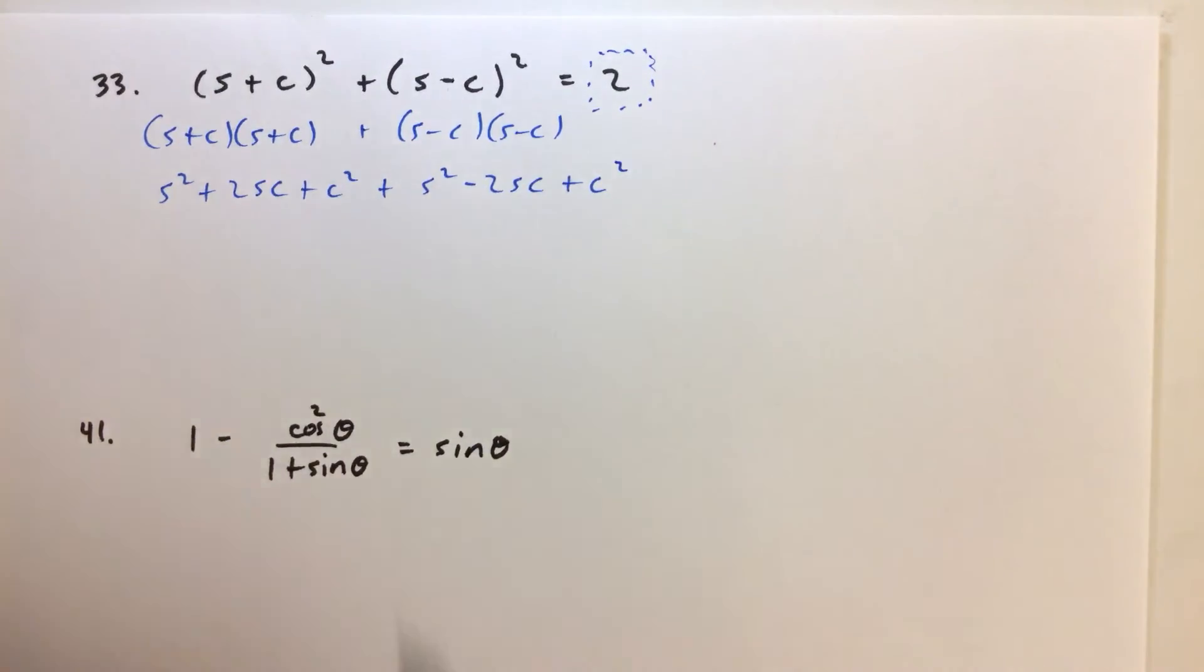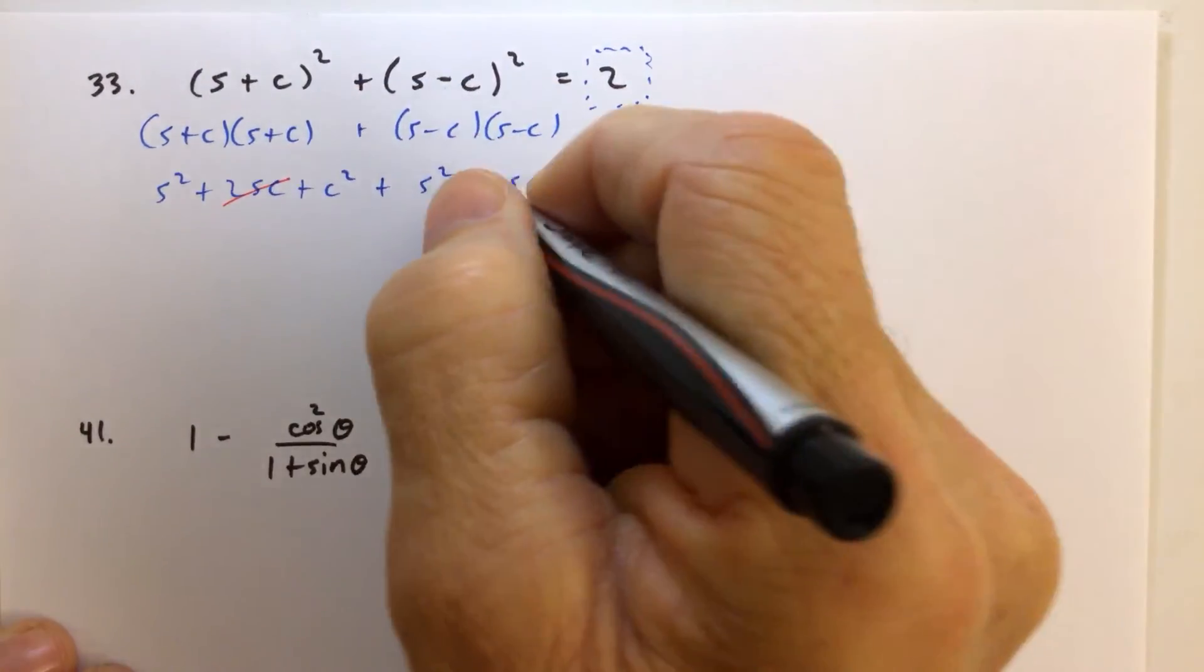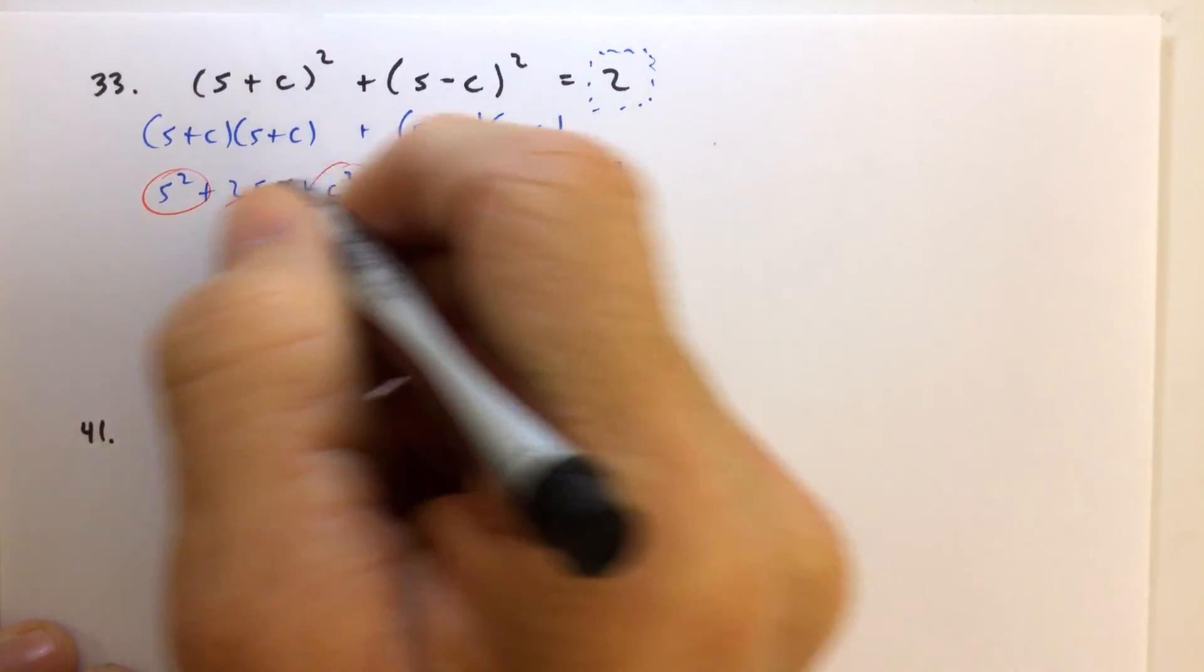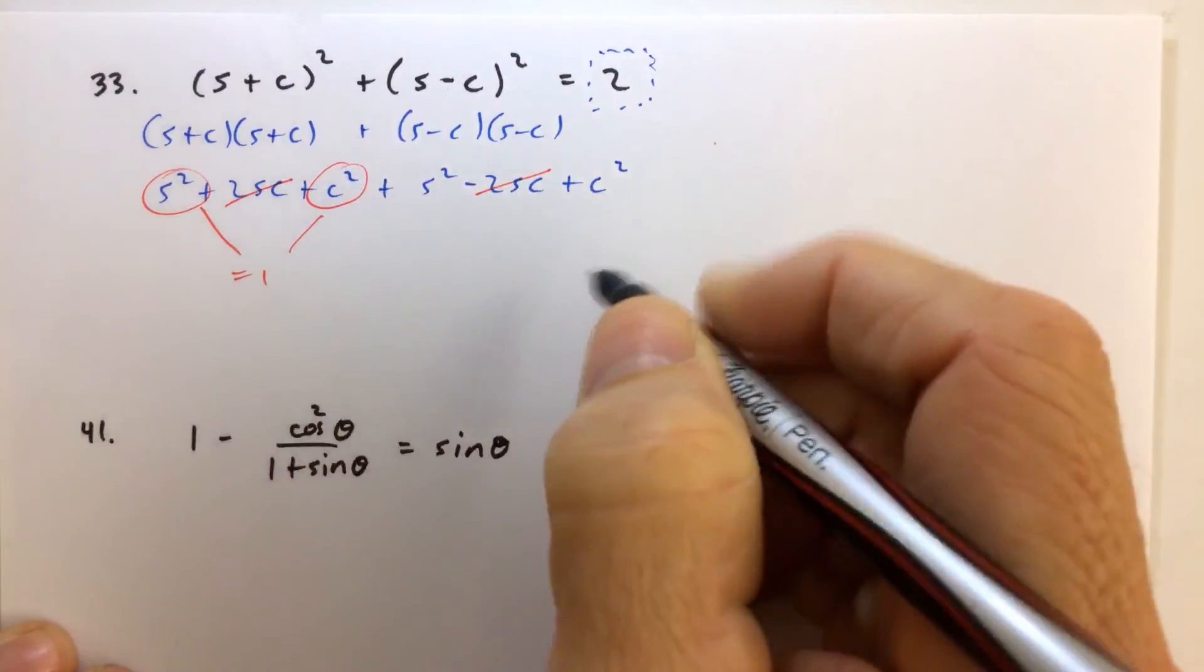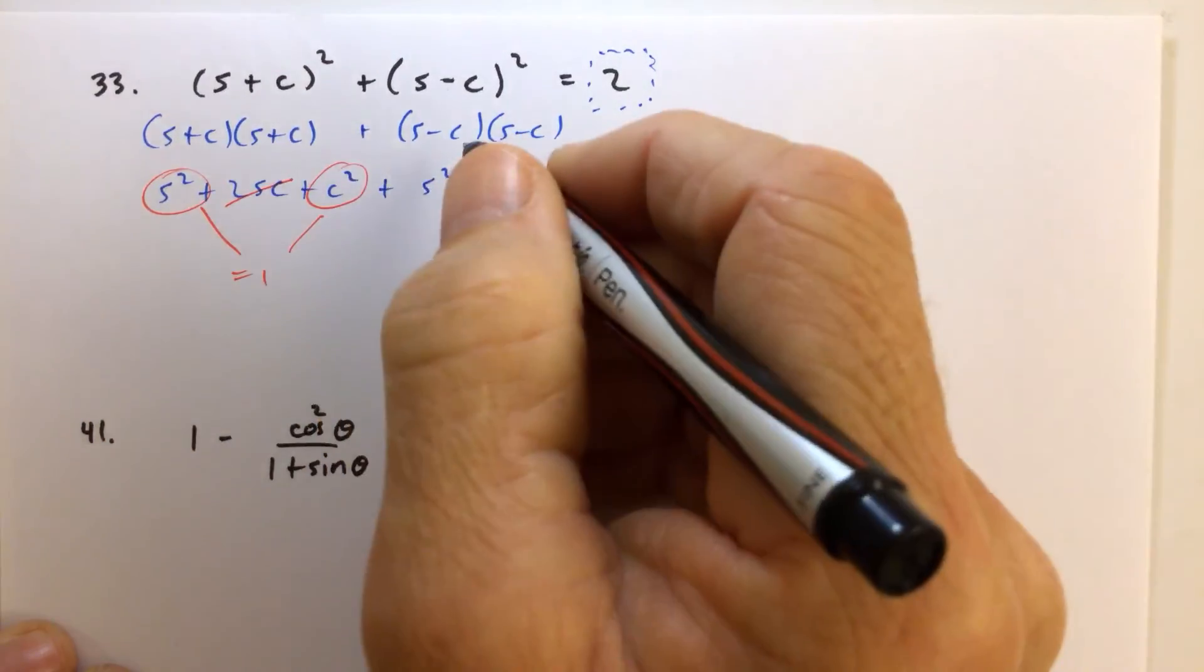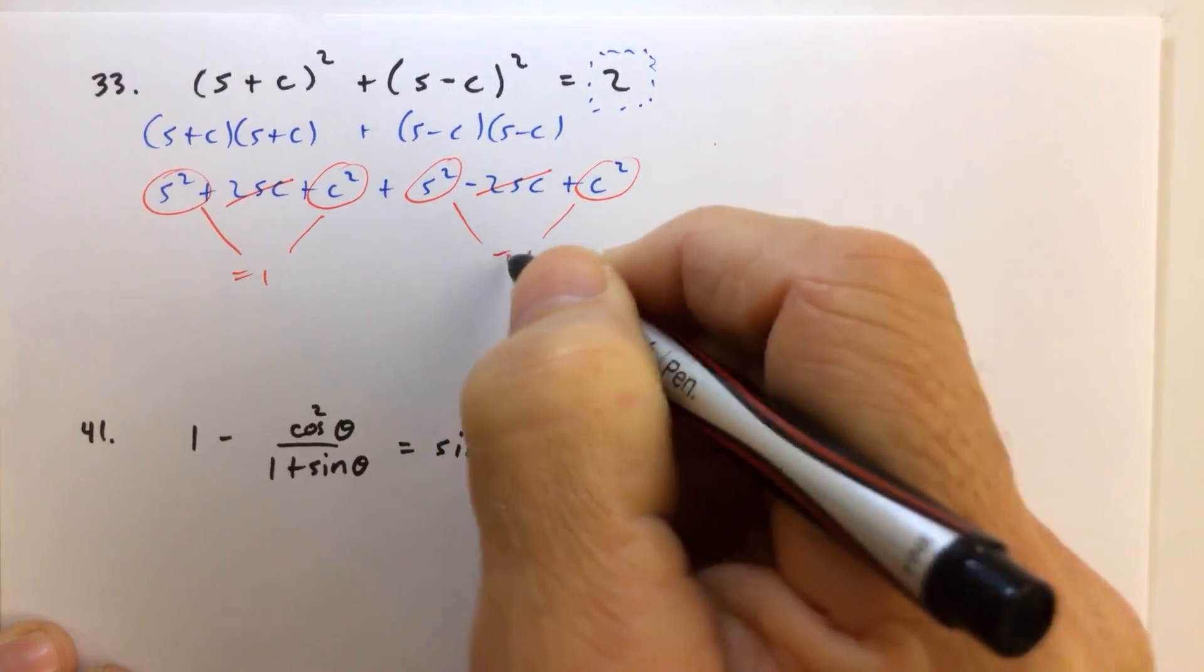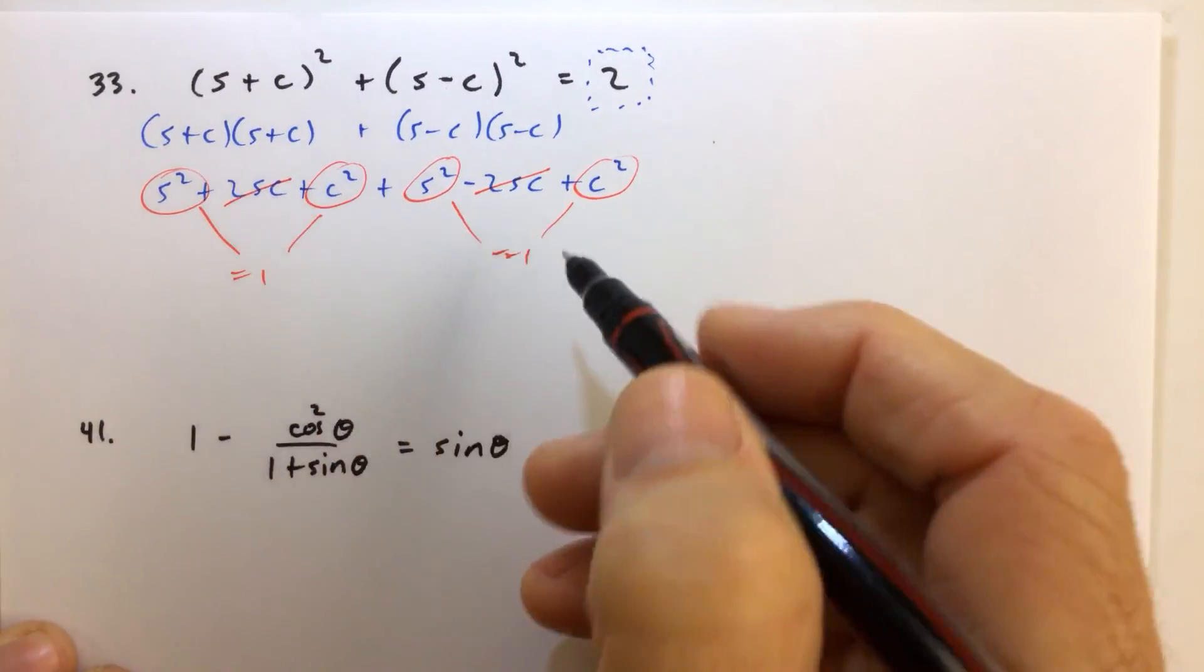So if you notice, what's happening here is that we've got the 2sc minus the 2sc—that's zero. And then s squared plus c squared, which is equal to one. That's sine squared plus cosine squared. And then we have another sine squared plus cosine squared, that equals one. So basically, we have one plus one, or two.